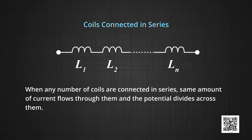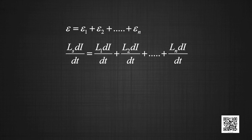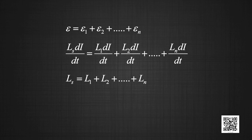For practical purposes, we can combine solenoids in series as well as in parallel. When any number of coils are connected in series, the same amount of current flows through them and the potential divides across them. Mathematically, E is equal to E1 plus E2 plus E3 and so on till En, which will equal Ls di by dt equal to L1 di by dt plus L2 di by dt and so on till Ln di by dt. Cancelling di by dt we get Ls equal to L1 plus L2 and so on till Ln. Therefore, combined inductance of coils connected in series is equal to sum of inductances of individual coils. In series, the total inductance increases.